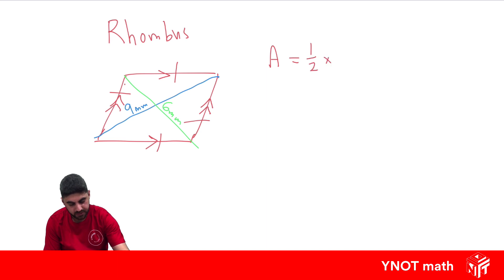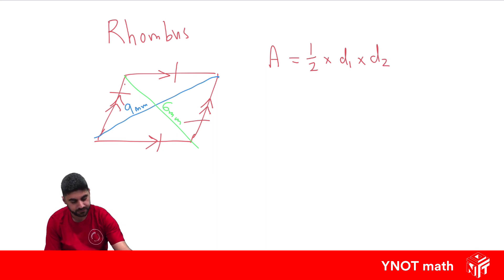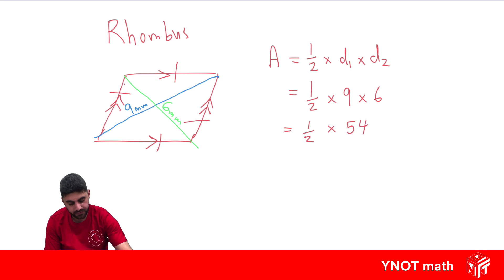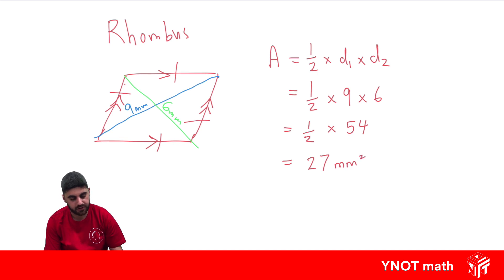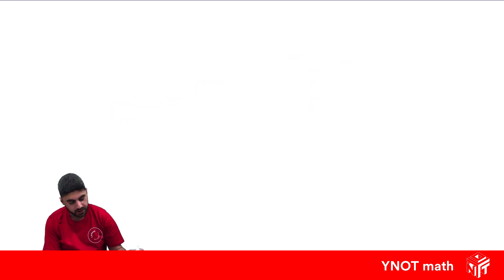The area of the rhombus is going to equal half times diagonal 1 times diagonal 2 — it doesn't matter the order in which you multiply them. So that's a half times 9 times 6. Well, 9 times 6 is 54, and half of 54 is 27 millimeters squared.